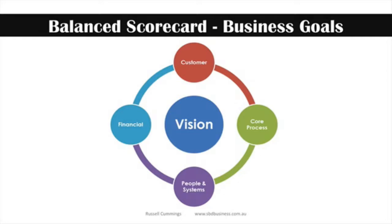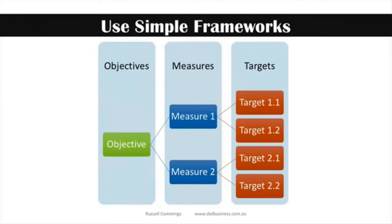Basically the balanced scorecard model says if we've got good people and systems driving good processes in our businesses, those processes make our customers happy, and happy customers give us money — and then the process goes on. You can use those four areas to set yourself objectives for your business and then break those down. So remember, use a simple framework: objectives, measures, and targets.